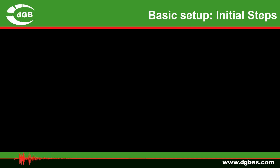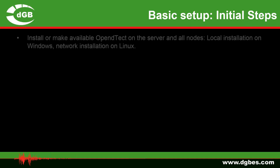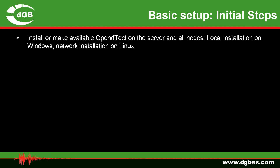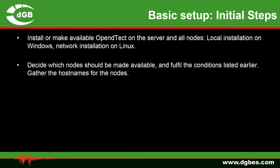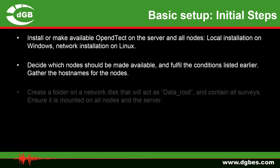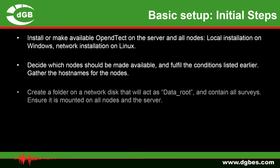Now we'll look at some initial steps for the basic setup. You need to install or make available OpenDTec on the server and all of its nodes — local installation on Windows and a network installation on Linux. You have to decide which nodes should be made available and fulfill the conditions listed earlier. Gather the host names for the nodes, then create a folder on a network disk that will act as a data route and contain all surveys, and ensure that it is mounted on all nodes and the server.